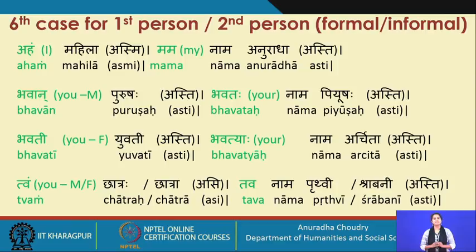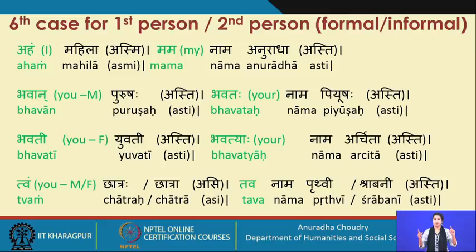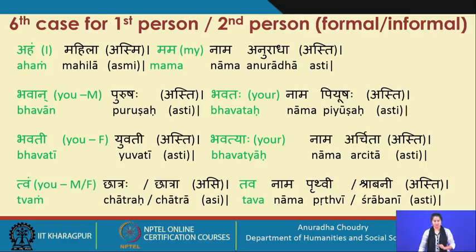The genitive of the second person informal tvam is tava — for example, tava naam Prithvi asti. The verb here is asti, indicating third person, because we are saying the name is something — not 'you are.' So it is not tvam asi, but tava naam asti. For a lady: tvam chhatra asi, tava naam Shrabani asti.